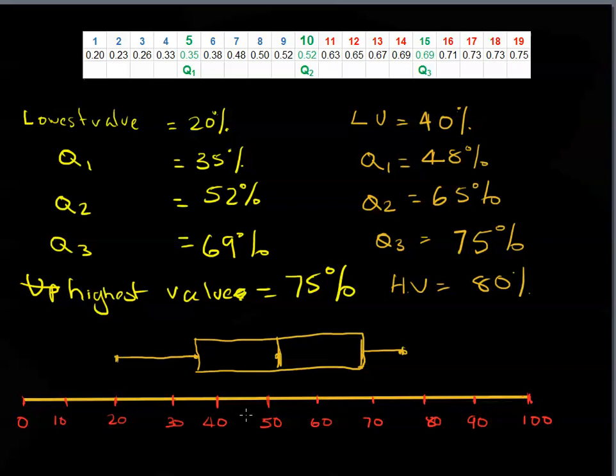How would that look? Let's draw that underneath here and see if it produces a different picture. The lowest value was here. Quartile 1 was at 48%. Quartile 2 was at 65%, the median. Quartile 3 was at 75%. Our highest value was at 80%. So when we draw this box plot up, same test that they sat.